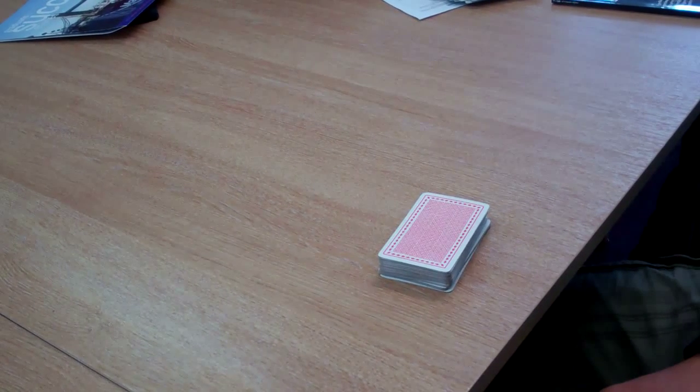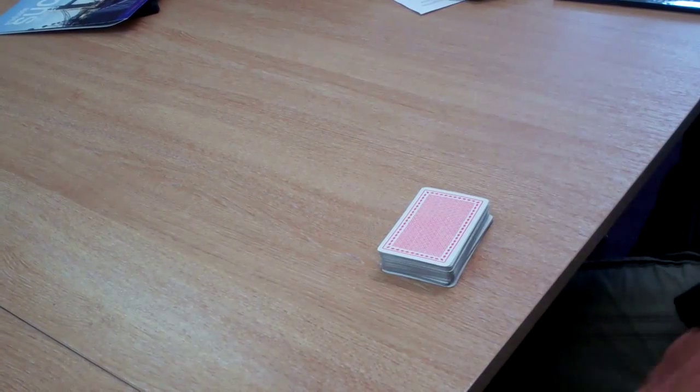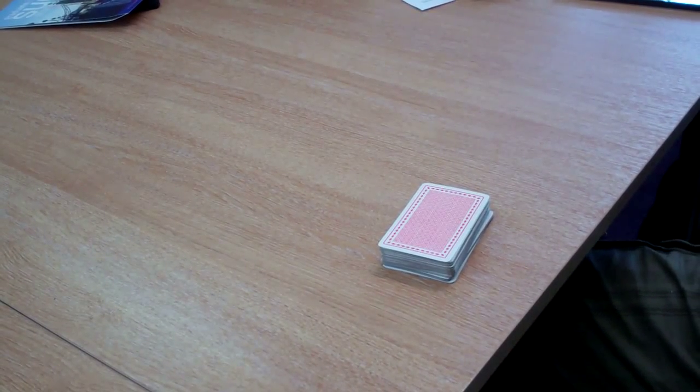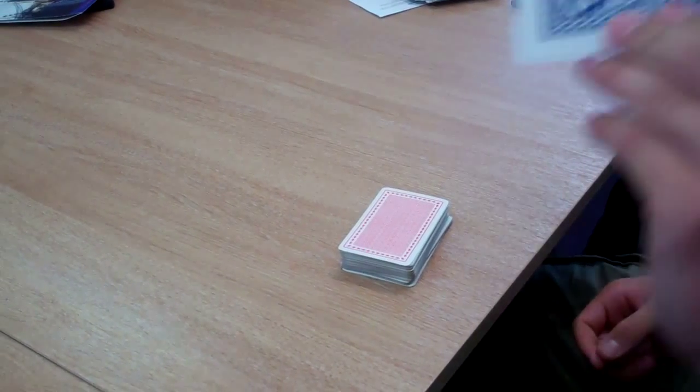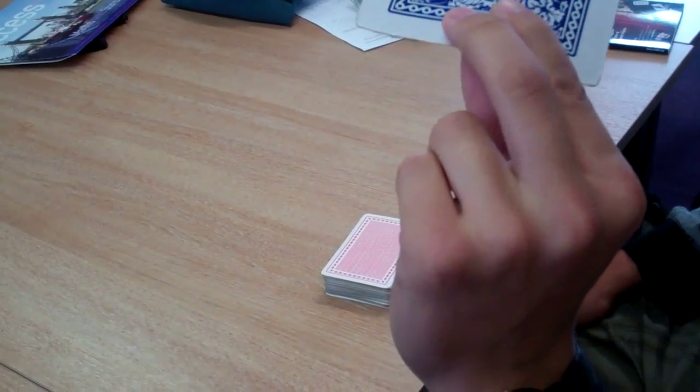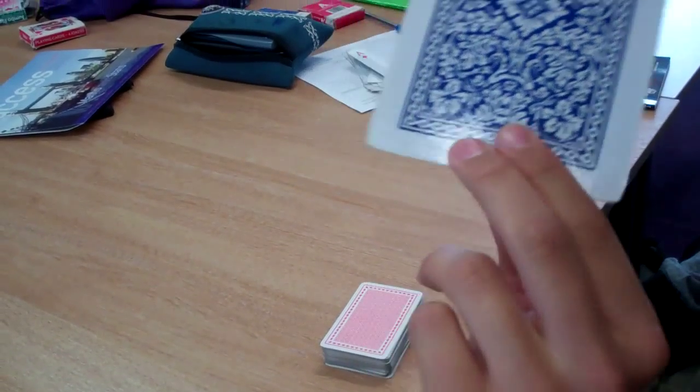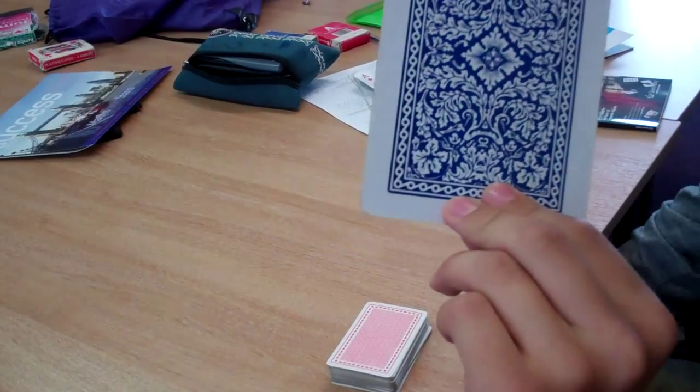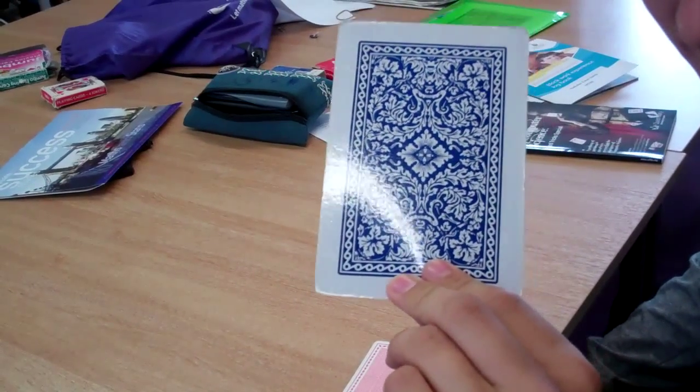All right, for this trick, I'm going to take a shuffled pack of cards, and then I'm going to take this card here and hand it to my assistant. This card holds a prediction of which card I think they will select.